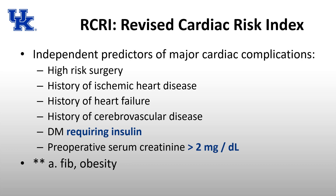Regarding AFib and obesity — a retrospective study did show an association between prior admission for AFib and post-op complications, with risk actually higher than in patients with coronary artery disease. However, AFib did not make it onto the RCRI, though it's worth keeping in mind. Obesity complicates all aspects of care, but it hasn't been shown specifically to be an independent predictor of end-organ damage, unlike the six RCRI factors which are independent predictors of major cardiac complications.